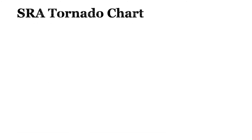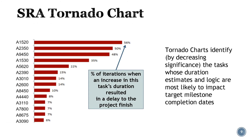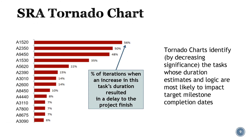This graphic on the left is a tornado chart, and it lists the tasks whose duration estimates and logic are most likely to impact the project's end dates. In this case, task A1520 resulted in a delay to the project's finish date in 56% of the iterations. These results allow the project team to take action on the specific tasks which are most responsible for the results of the SRA.